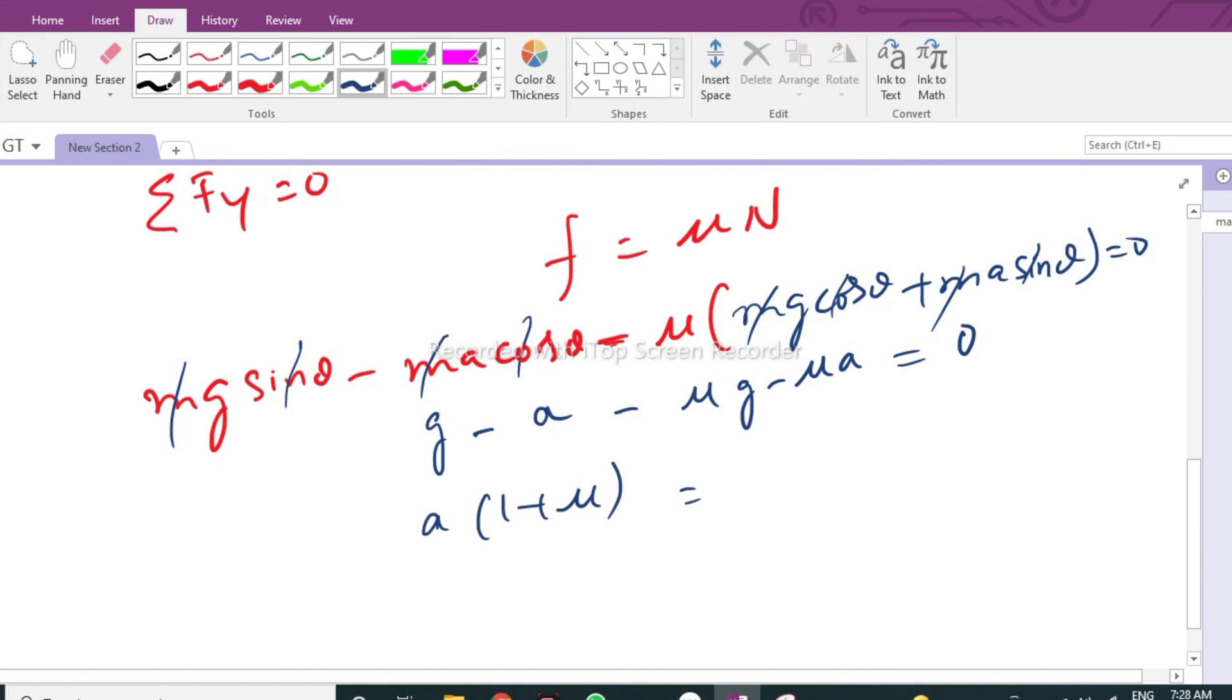Take a to the right-hand side: it becomes a times (1 plus mu) equals g times (1 minus mu). So a equals g times (1 minus mu) divided by (1 plus mu). This is how you solve this type of problem.